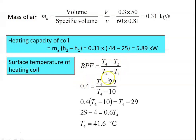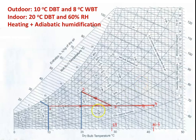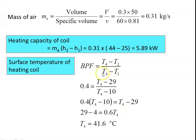The bypass factor equation is: BF = (T4 − T2) / (T4 − T1), where T4 is the surface temperature of the heating coil, T2 is the outlet temperature, and T1 is the inlet temperature. Bypass factor = 0.4, T2 = 29°C (from chart), T1 = 10°C (given). Rearranging and calculating: T4 = 41.6°C. That is the surface temperature of the heating coil.